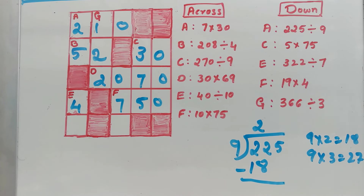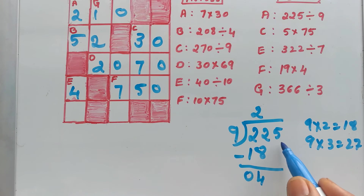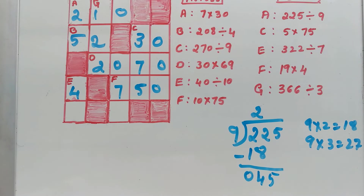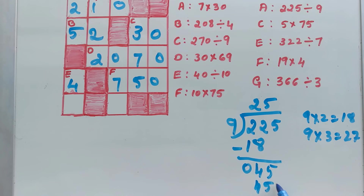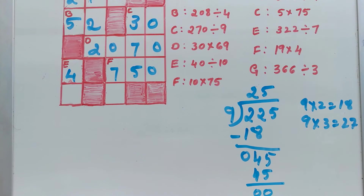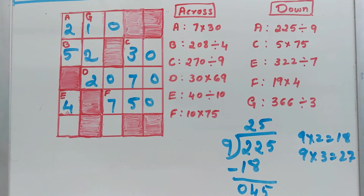Subtraction: 22 minus 18 is 4. This 4 is smaller than 9, so bring down the next number: 45. 9 times 5 is 45. Remainder is 0 and the quotient is 25. So 225 divided by 9 is 25 — answer is correct.